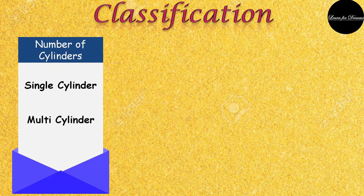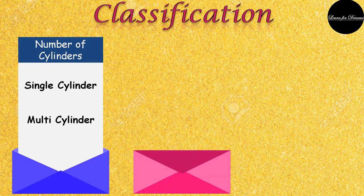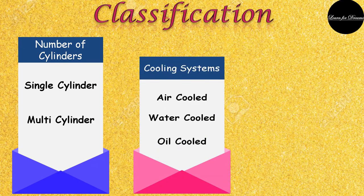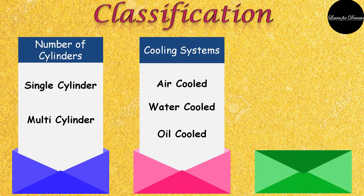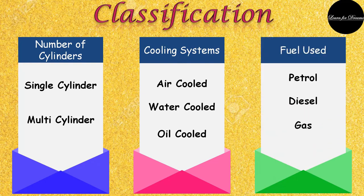Some more classifications of IC engines are according to number of cylinders — whether it is a single cylinder or multi-cylinder. Next is according to the cooling system used — that is air-cooled engine, water-cooled engine, or oil-cooled engine. Next is according to the type of fuel used — that is petrol engine, diesel engine, or gaseous engine, where you are going to use auto LPG or CNG.